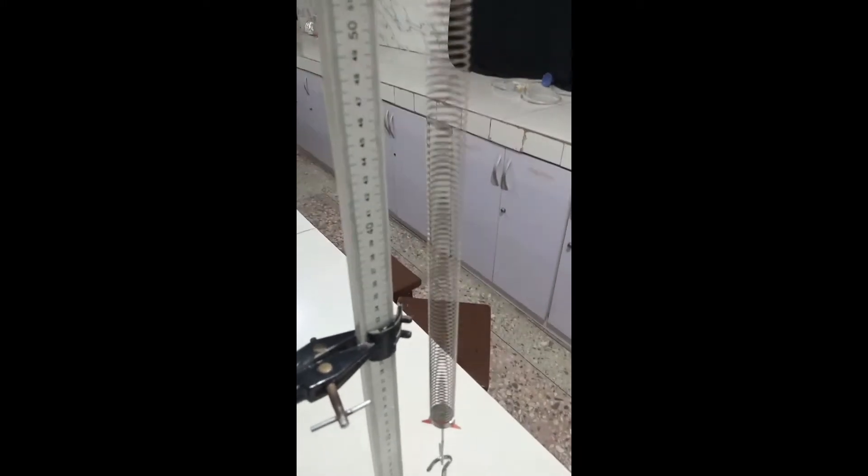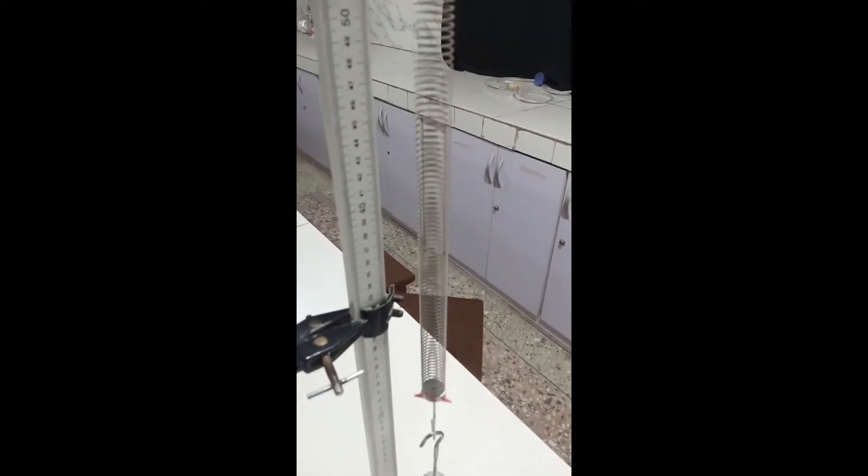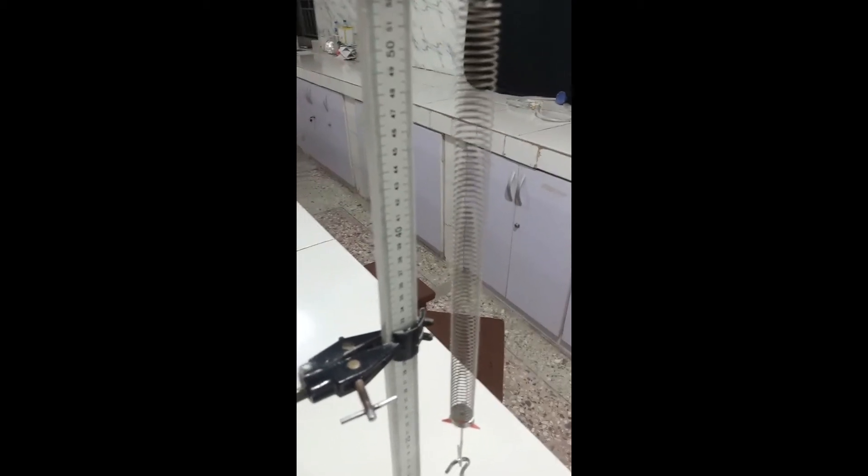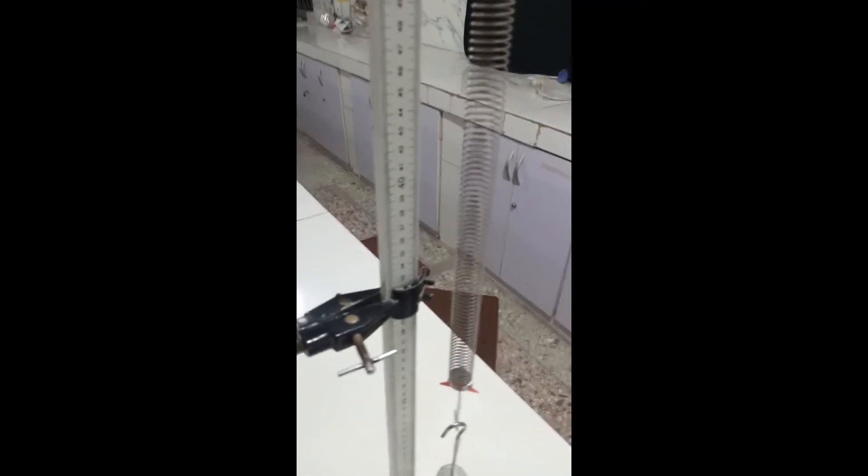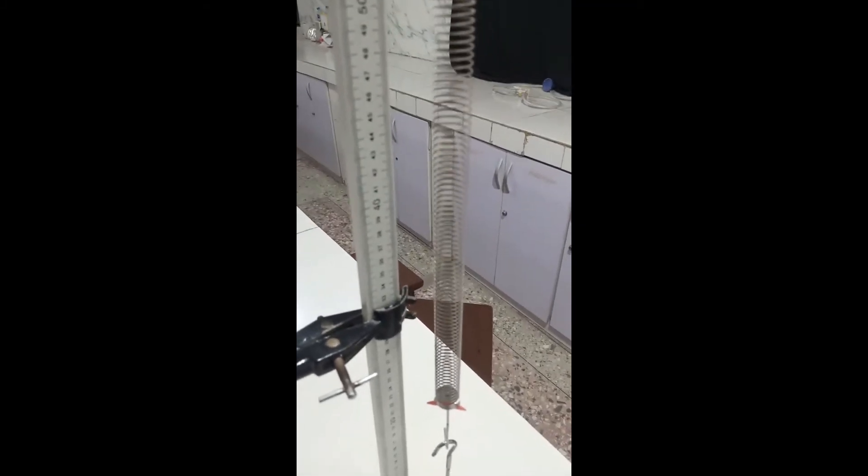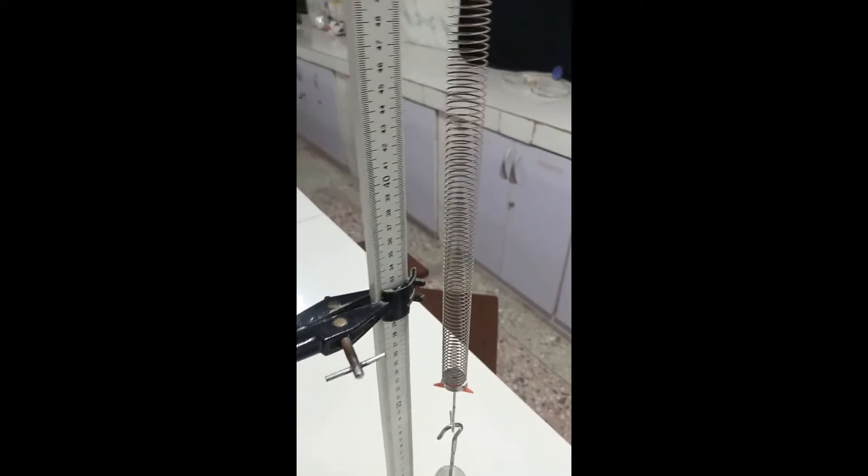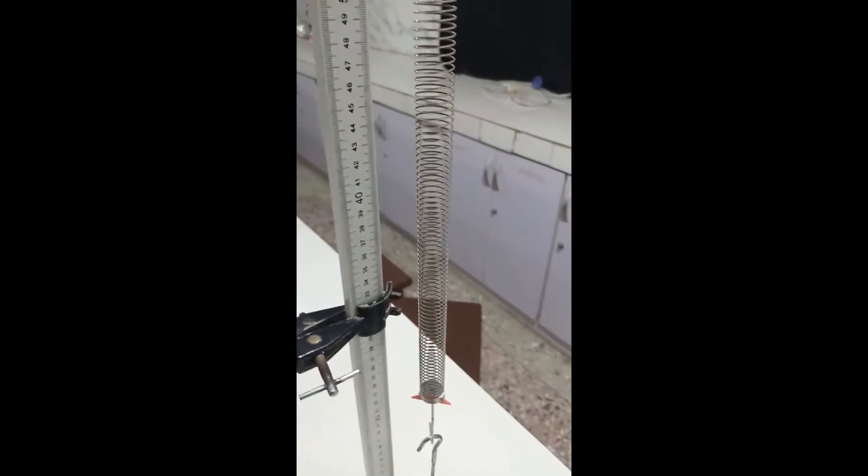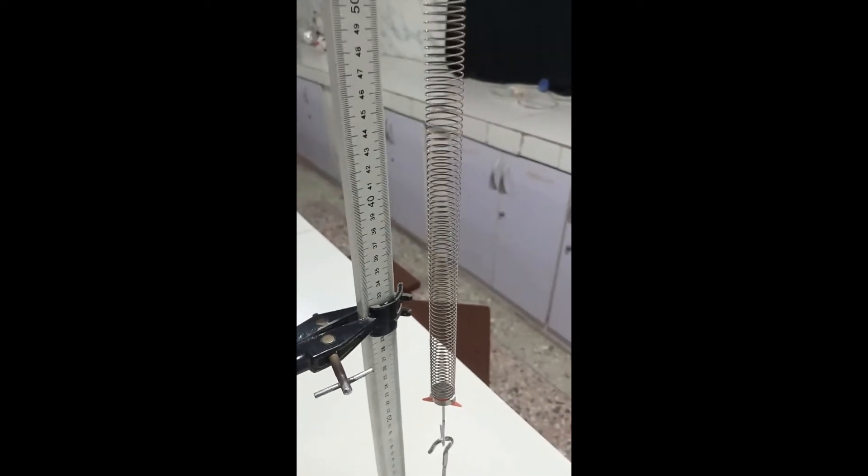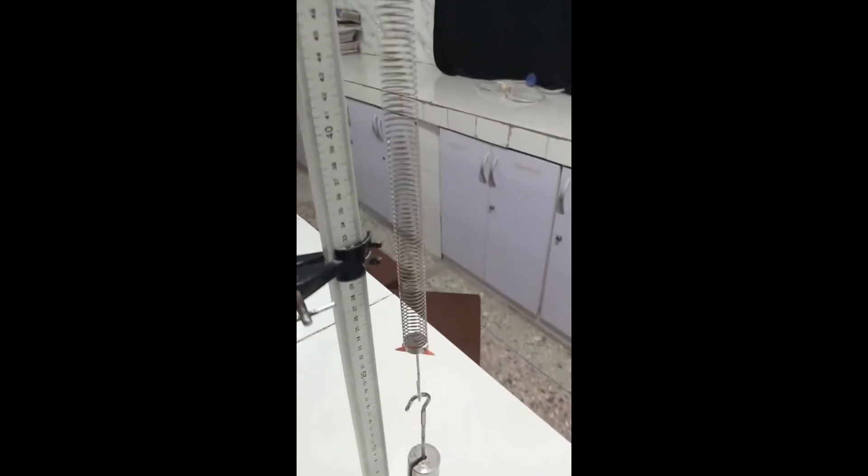Okay, so the extension produced is 0.18 meters for that 100 gram mass or 0.1 kg mass. Now I'll go ahead and put in or slot in another 100 gram mass and also measure the extension produced as well. I'll record them and I'll do that for other five readings and I'll tabulate my reading.